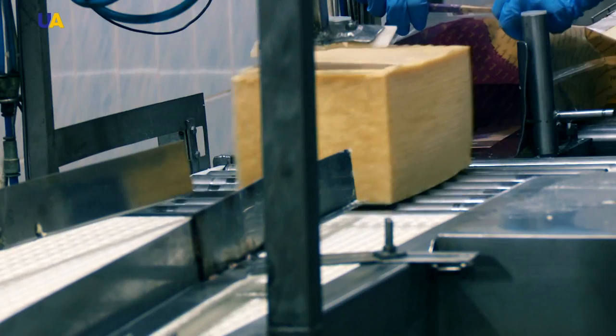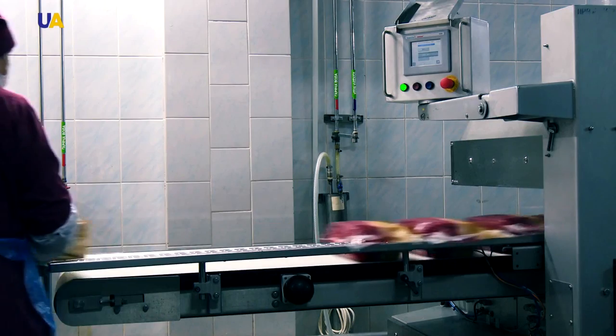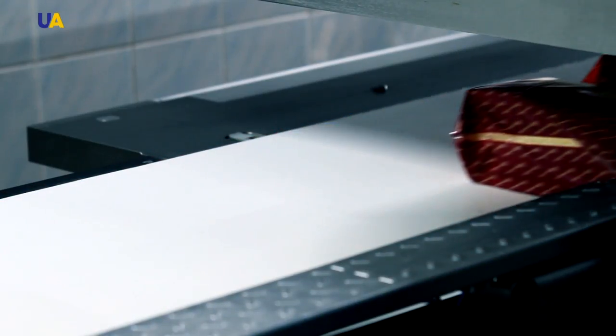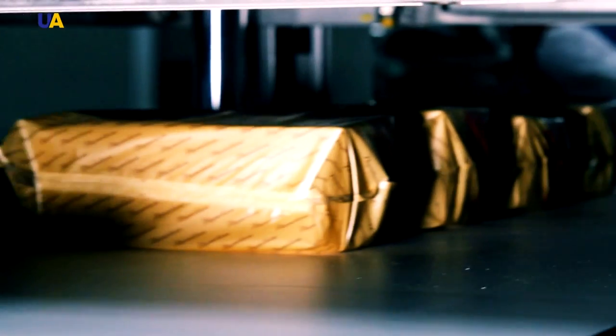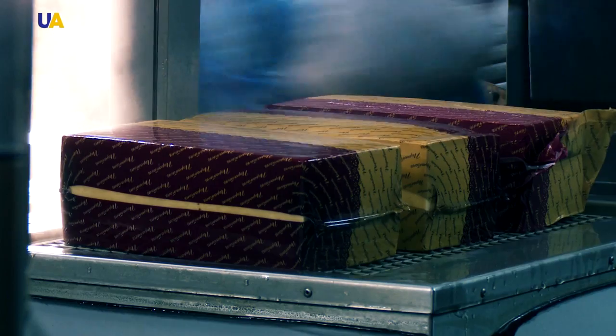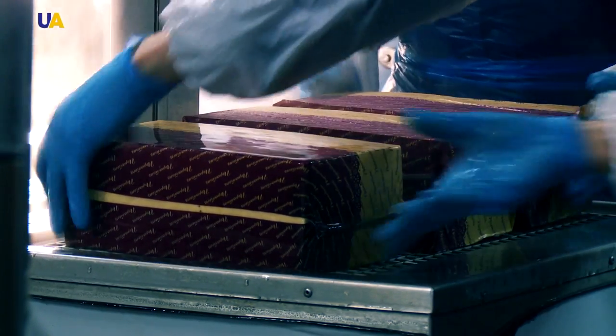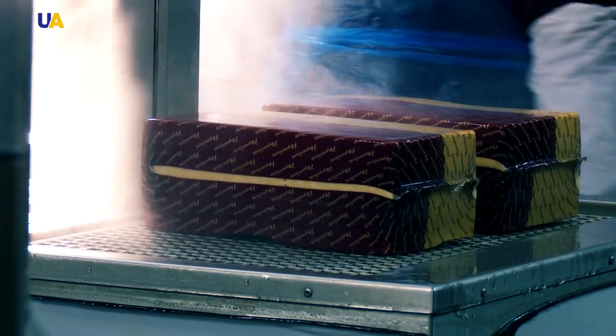After all, the cheese heads are placed on a barrier bag that will protect it from mold throughout the maturation process and the sale of the product to end consumers. Then the cheese is vacuum packed and the special machine seals the film. Then the bag of cheese is placed in a shrink chamber, which ensures a tighter fit of barrier bag to the surface of the cheese.